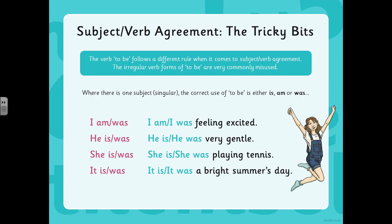There are some tricky bits when we're using the verb 'to be'. So when it's singular, you would use the form is, am, or was. I am feeling excited. He was very gentle. She is playing tennis. It is a bright summer's day. You would not say 'I is feeling excited' — that wouldn't make sense. Or 'I were feeling excited'.